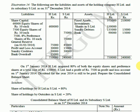H Limited holds both the equity shares and preference shares in S Limited at a total cost of rupees 1,50,000. The holding company holds 80% of equity shares and 80% of preference shares in S Limited. H Limited holds 7,500 equity shares and preference shares representing 80% each.